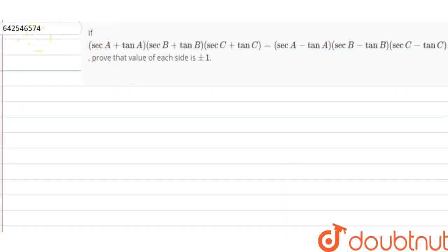Hello everyone, so our question is: if sec A plus tan A into sec B plus tan B into sec C plus tan C is equal to sec A minus tan A into sec B minus tan B into sec C minus tan C, and we need to prove that the value of each side is plus minus 1.